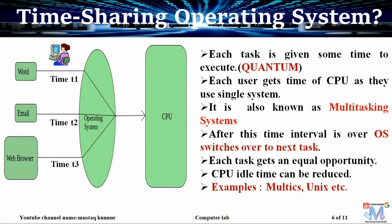In time sharing operating system, the user is operating on multiple tasks at the same time. For example, a user is operating on Word and email, and is also downloading some files from a web browser — these three applications are simultaneously operating on the operating system. The operating system combines these three tasks and feeds them to the CPU.